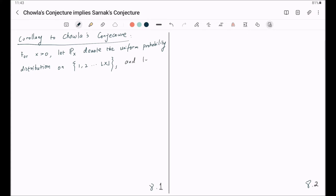And let n be a random variable taking values in the same set following this distribution. This means this integer n, or this random variable, is drawn uniformly randomly from this set of integers from 1 through the floor of x.